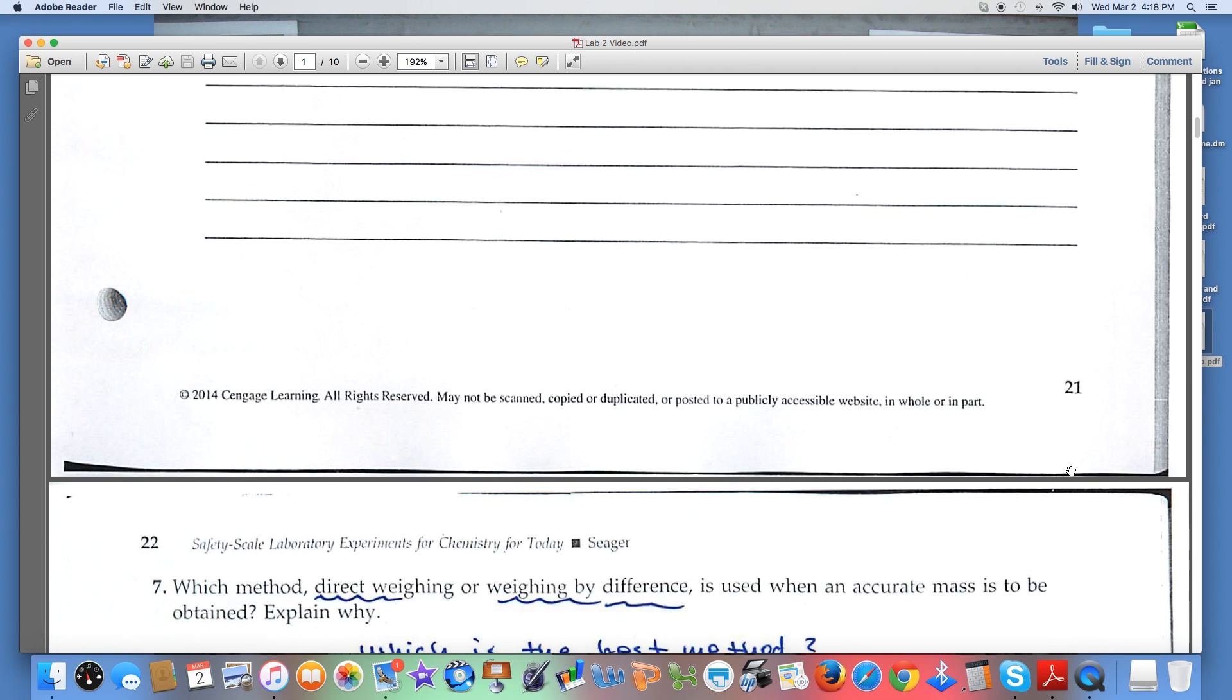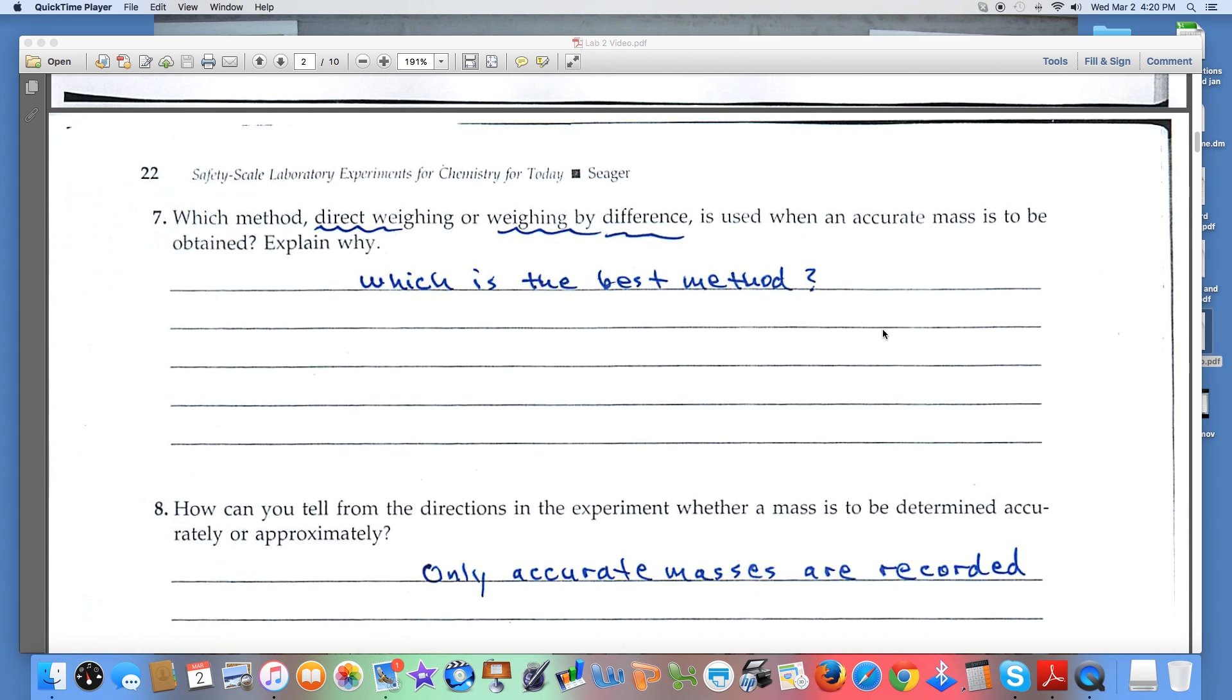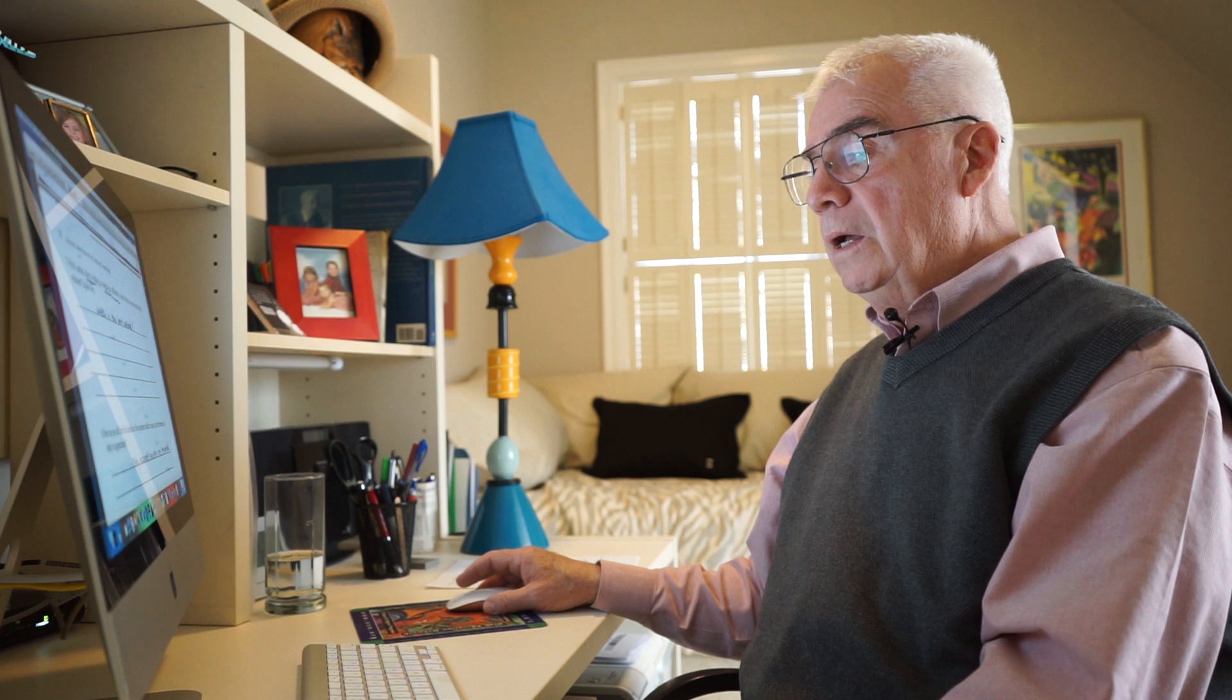Question seven asks which method, direct weighing or weighing by difference, is used when an accurate mass is to be obtained. The real question is which method is better. When you weigh by difference, typically you subtract out the error associated with the balance, so weighing by difference is often the best. Question eight: how can you tell whether a mass is to be determined accurately or approximately? If the directions tell you to record the mass, that's your clue that it's the accurate mass. Only accurate masses are recorded.